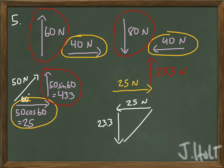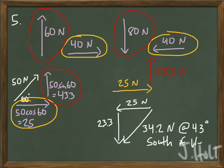So now I can find the resultant of my two opposite sides using the Pythagorean theorem. I get 34.2. I'm going to go ahead and find my angle, too. I'm going to use the inverse tan function to find my angle 43 degrees in the south and west direction.